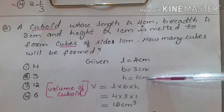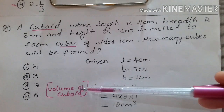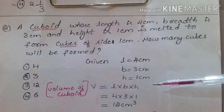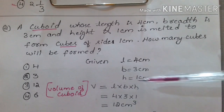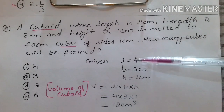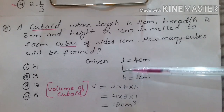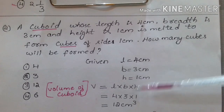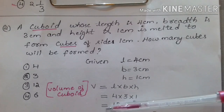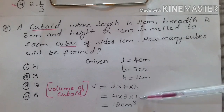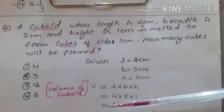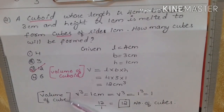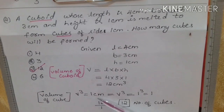Height of the cuboid is 1 cm. The formula for volume of a cuboid is V = L × B × H. Length L is 4 cm, breadth B is 3 cm, height H is 1 cm. So we get 4 × 3 × 1 = 12 cm³.